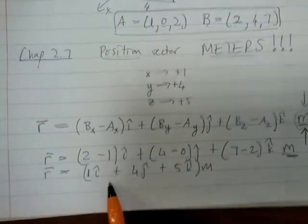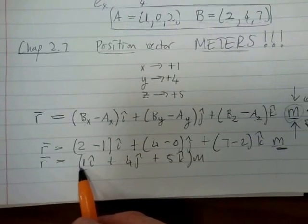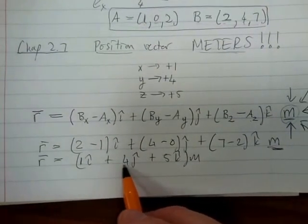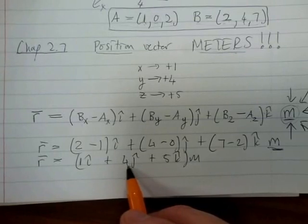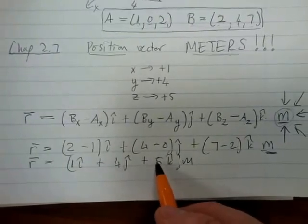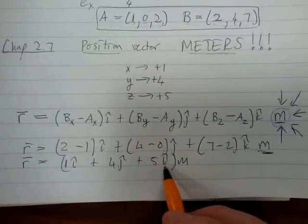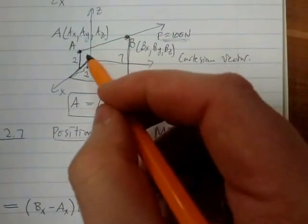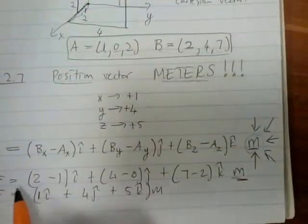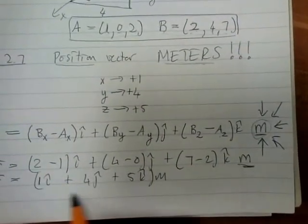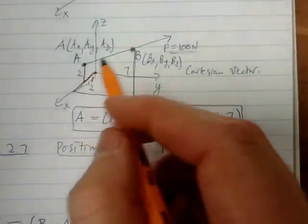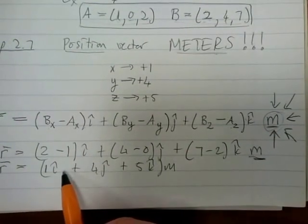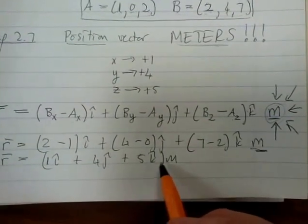R equals 1i + 4j + 5k meters. Meaning I have to move one meter in the i direction, then four meters in the j direction, then positive five meters in the k direction. That gives this position vector showing how to get from A to B.